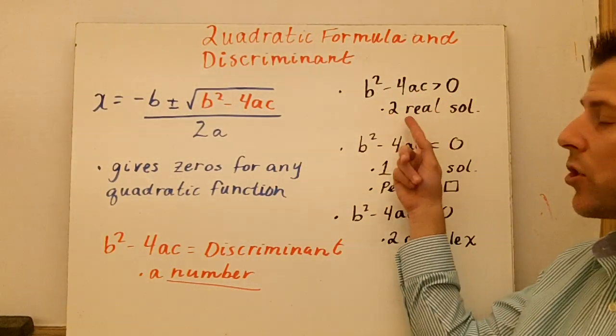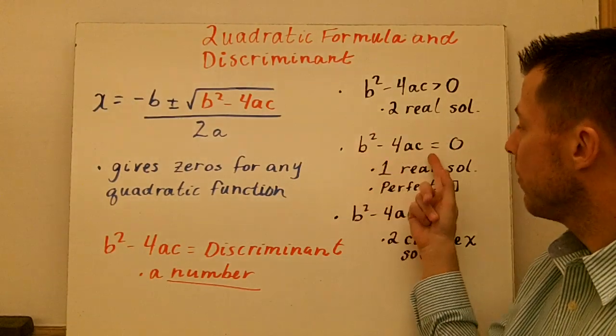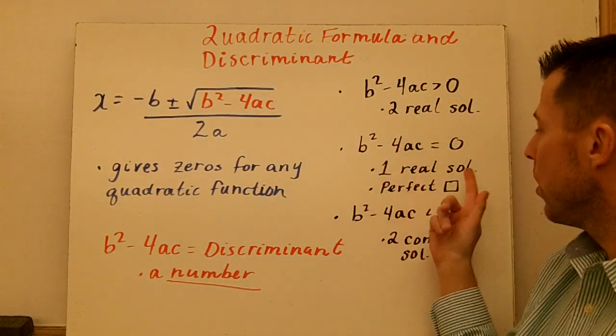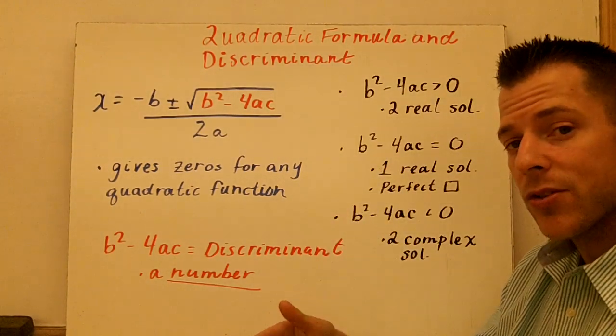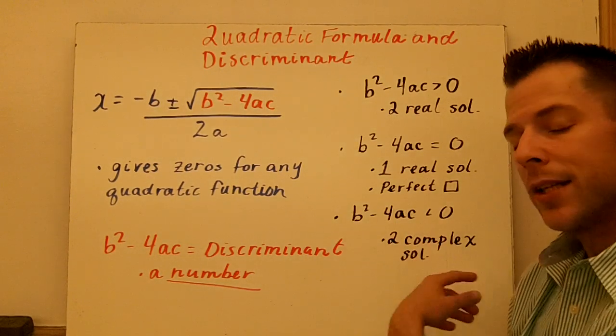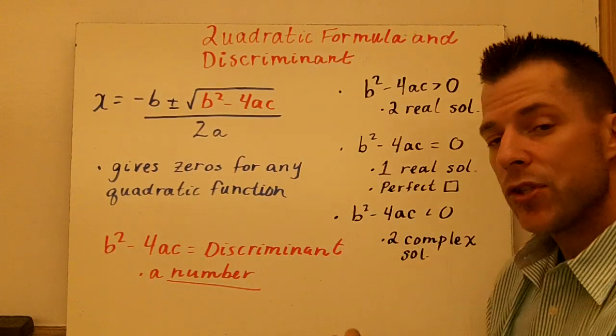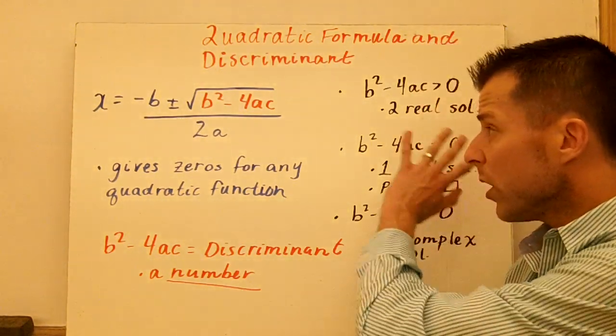When the discriminant is greater than 0, you're going to get two real solutions. If the discriminant is equal to 0, you get one real solution, because that trinomial, that quadratic, is going to be a perfect square. And finally, if your discriminant is less than 0, you're going to have two complex solutions.